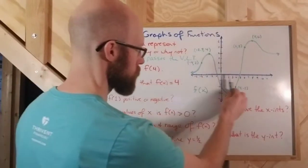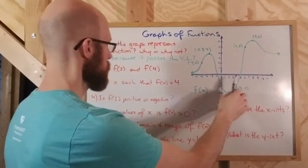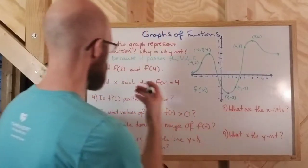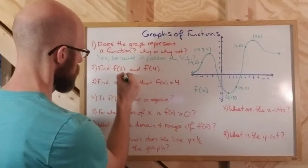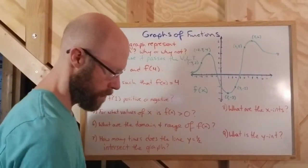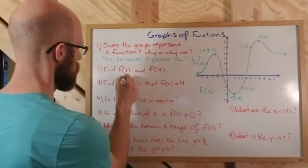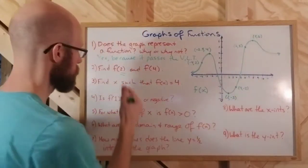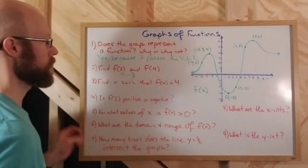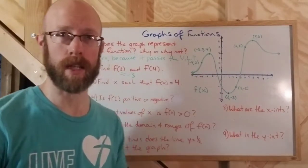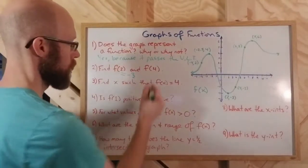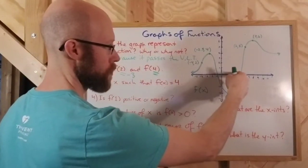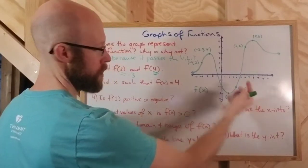So f of 2 is going to be negative 3, because negative 3 is the output that corresponds to the input of 2. f of 4 is the output that corresponds to an input of 4. If I go over to 4 and down to the graph, the output is negative 2. So if the number is in the parentheses, that represents the input of x, and when you're looking for f of 4, you're looking for the output that corresponds to the input of 4.